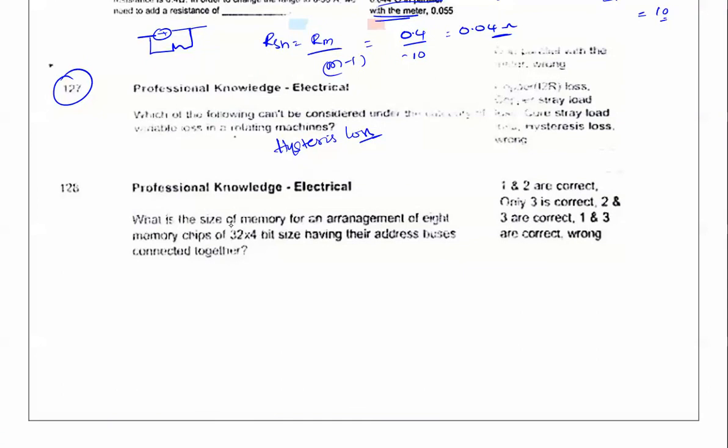The next question is, what is the size of the memory for arrangement of 8 memory chips? Here we have 8 memory chips of 32 x 4 bit size having their address buses connected together. So it requires 32 x 32 bit size. This is the memory size for this question.